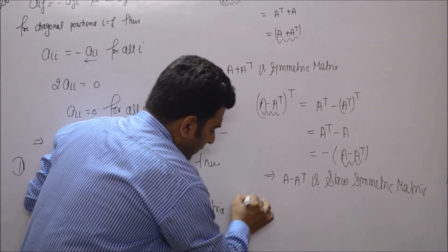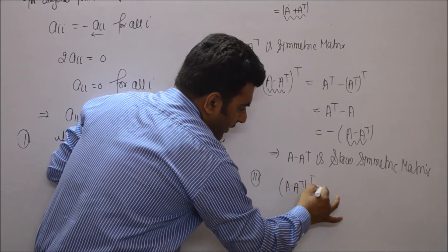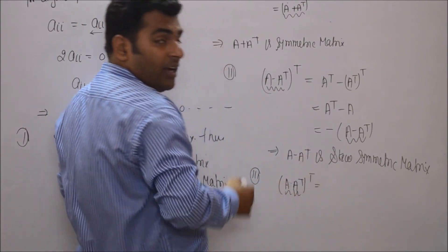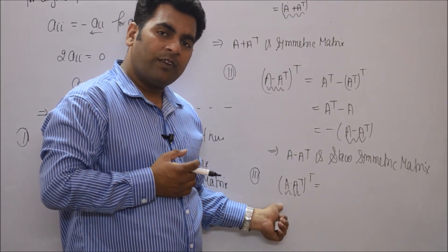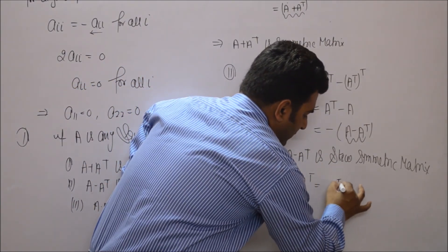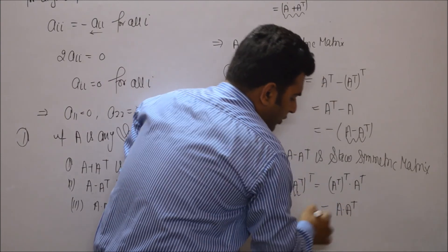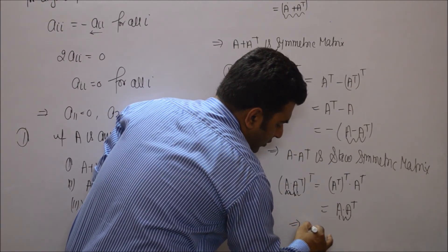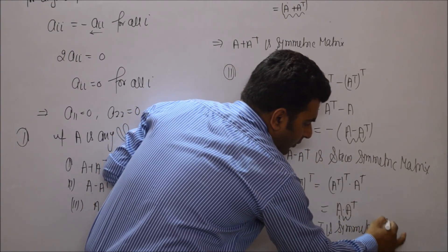Third: AAᵀ is a symmetric matrix. Taking the transpose of (AAᵀ): by the reversal law, this equals (Aᵀ)ᵀ · Aᵀ = A · Aᵀ. Since the transpose equals itself, AAᵀ is a symmetric matrix.